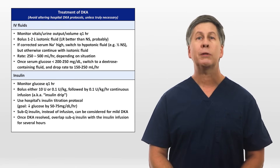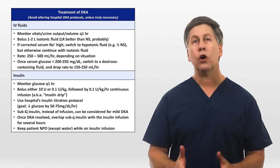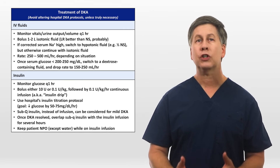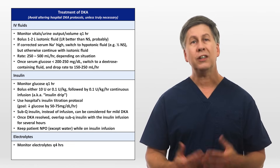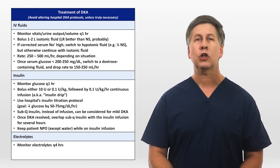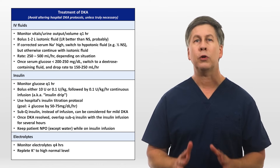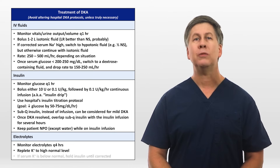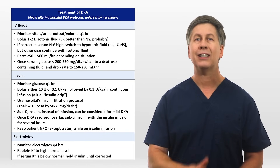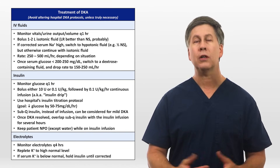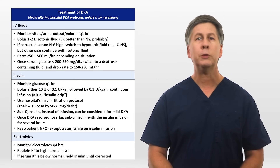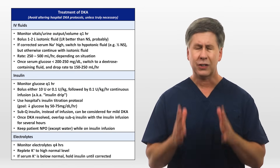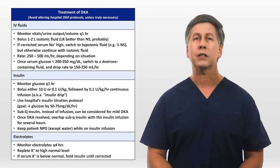Once DKA is resolved, overlap subcutaneous insulin with the insulin infusion for several hours. Remember that while a patient is on an insulin drip, they need to remain NPO, as a sudden glucose load from a meal could cause substantial swings in insulin needs. With electrolytes, they should be checked every 4 hours until the DKA is resolved or nearly resolved. This is one of a very short list of circumstances in which potassium should be repleted to high normal levels. If at any point the serum potassium dips below the normal range, insulin should be held until the potassium is corrected. You don't need to be nearly so aggressive with phosphate repletion as you do with potassium.